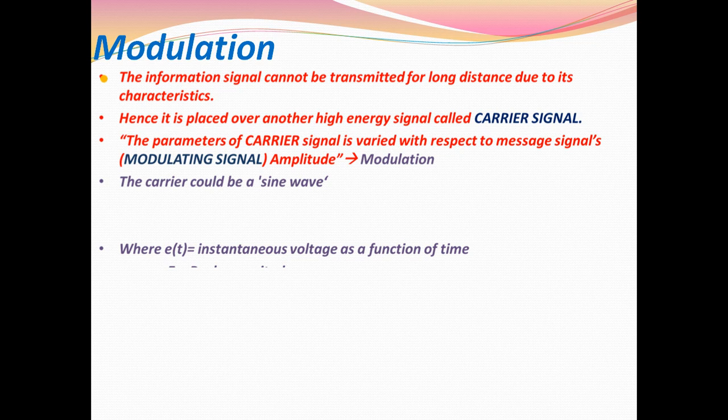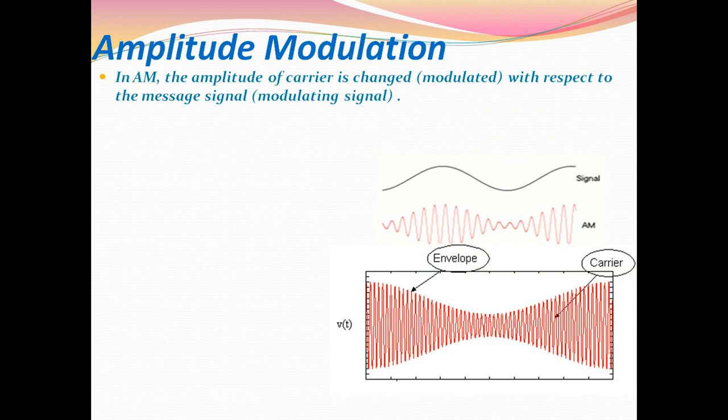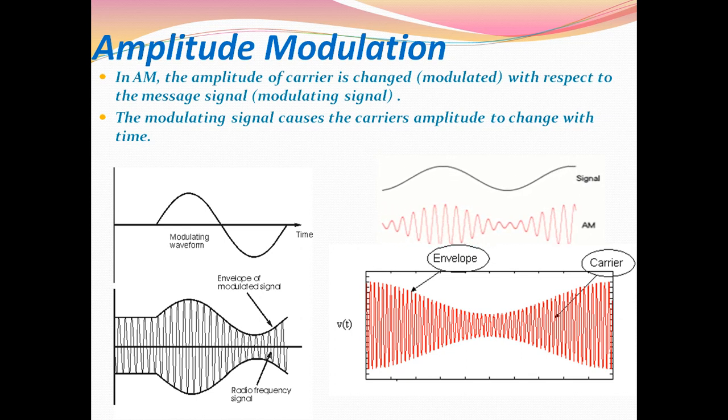There are different types of modulation techniques in analog communication: amplitude modulation, phase modulation, and frequency modulation. Amplitude modulation is a process of changing the characteristics of a carrier signal in accordance with the message signal. In amplitude modulation, we are varying the characteristics of a carrier signal in accordance with the message signal.